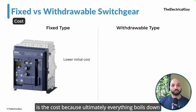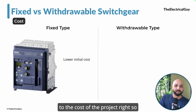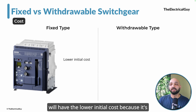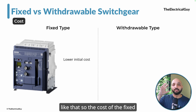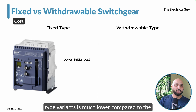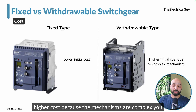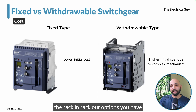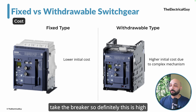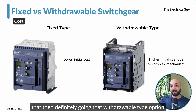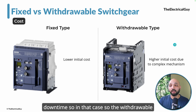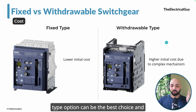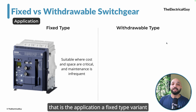The most important point is cost. The fixed type has a lower initial cost because it is simple in construction with no complicated moving parts or interlocks. The withdrawable type has a higher cost due to complex mechanisms, interlocks, rack and rack out options, and the trucks needed to move the breaker. However, if your project demands it — if you cannot afford shutdowns or long downtimes — then the higher cost of withdrawable type makes sense.